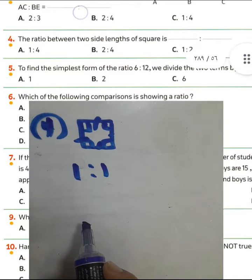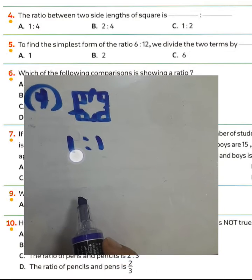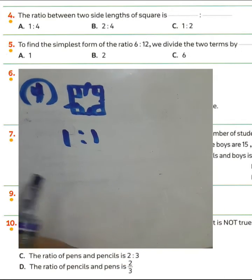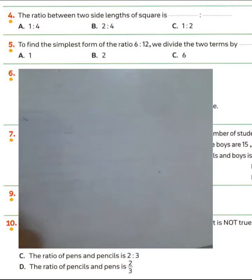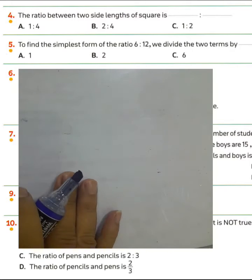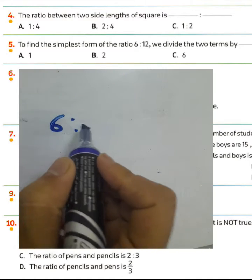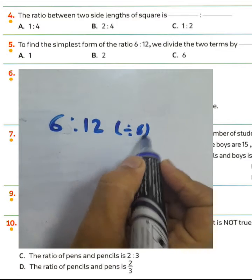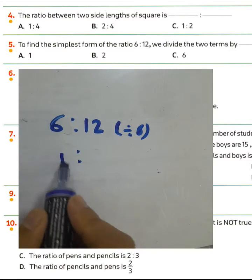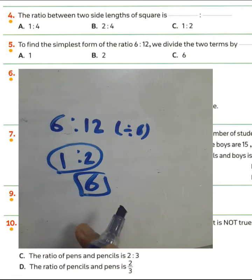Number 5: to find the simplest form of the ratio 6 to 12, we must divide both terms by 6, because 6 is the highest common factor between the two numbers. These become 1 and 2, then you must divide by 6. Choose the third option.